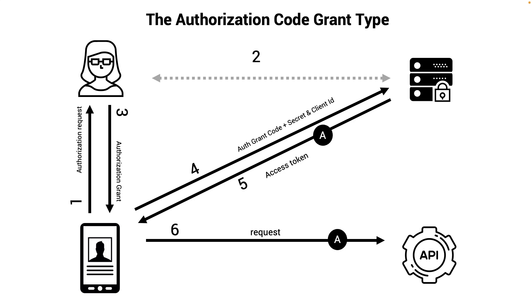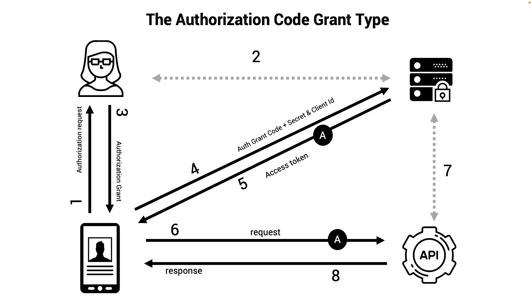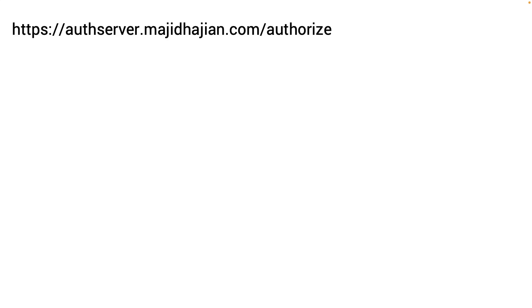Once we have the access token, we can send our request via an HTTP API call to our backend. If our backend is separate, it needs to communicate with the authorization server to make sure the token is valid. Once that is confirmed, the response comes back.